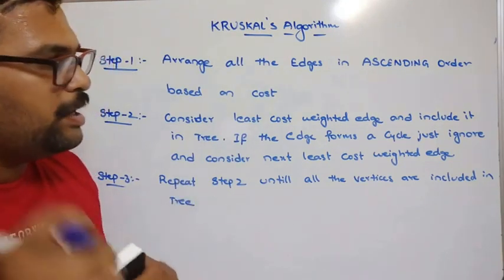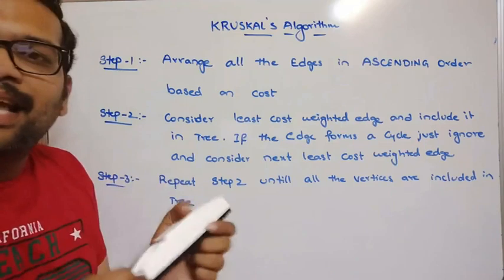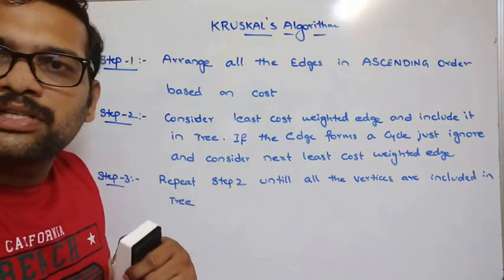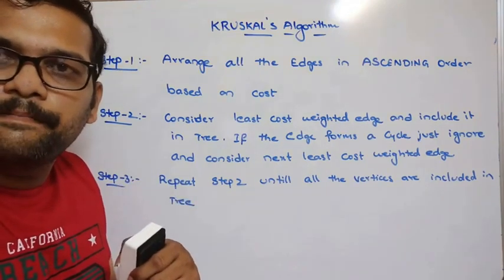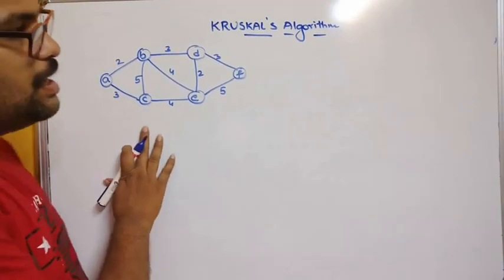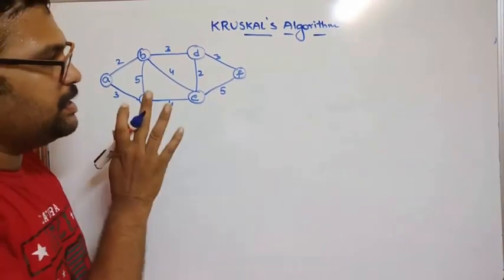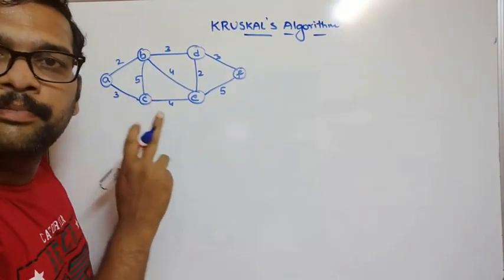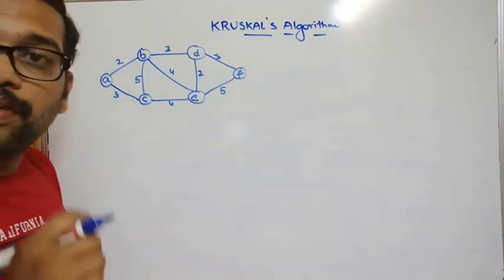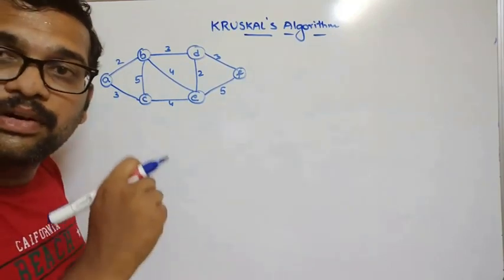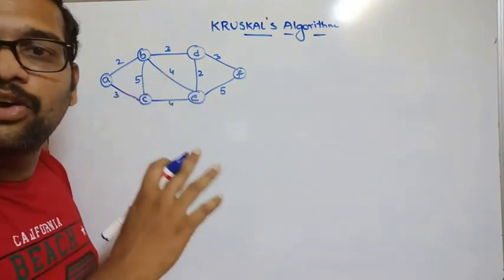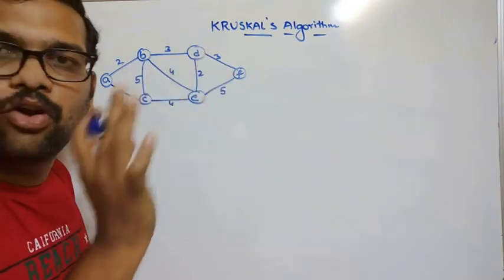Hope you understood this one. Now we'll see an example and find the minimum cost spanning tree. Let us consider this graph. The first step is to arrange all the edges in ascending order based upon their cost.